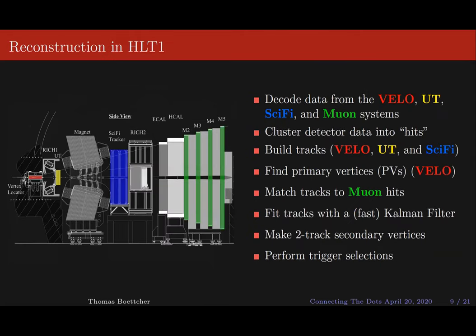What does Allen need to do for HLT1 at LHCB? HLT1 uses primarily four tracking systems: the VELO (vertex locator), the upstream tracker (UT), the SciFi tracker (scintillating fiber tracker), and the muon stations. Allen needs to decode data from these sub-detectors, cluster it into hits in the detector coordinate system, build tracks, find primary vertices, match tracks to muon hits to identify muons, fit tracks with a fast Kalman filter to improve track description close to the beamline, make two-track secondary vertices, and finally perform trigger selection.